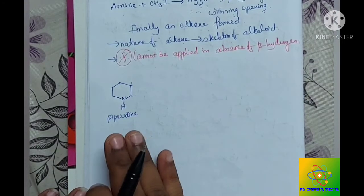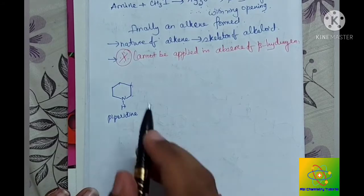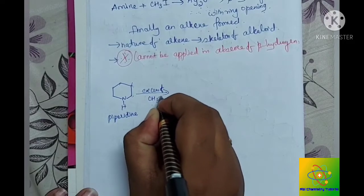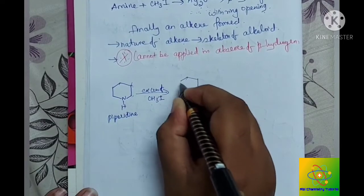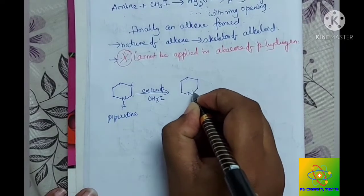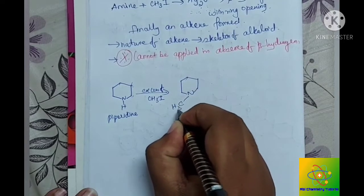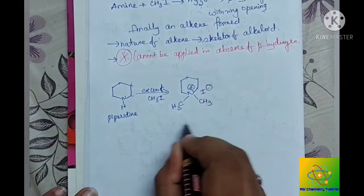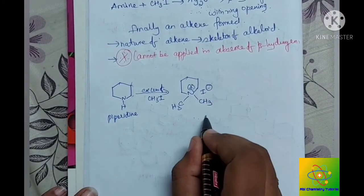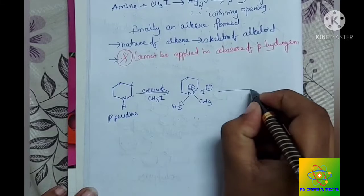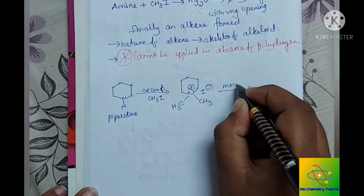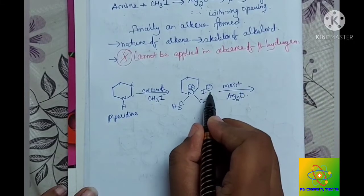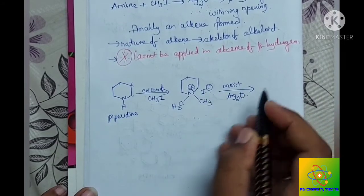First we are adding excess of methyl iodide, so that we will get a quaternary ammonium salt. This is a quaternary ammonium salt, and to this we are adding moist Ag2O silver oxide. During this, I- will be converted to OH-.